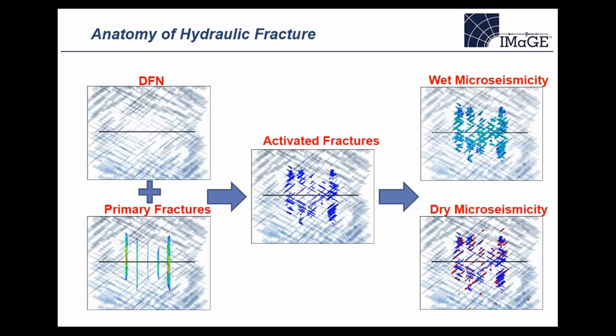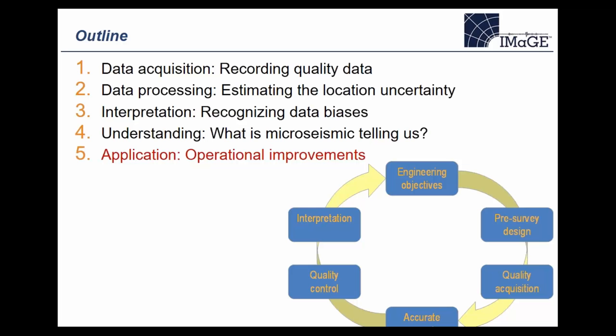What we're starting to see are coupled hydraulic fracture and geomechanical models that link everything together and use that as a tool to predict where proppant sits within the microseismic cloud.